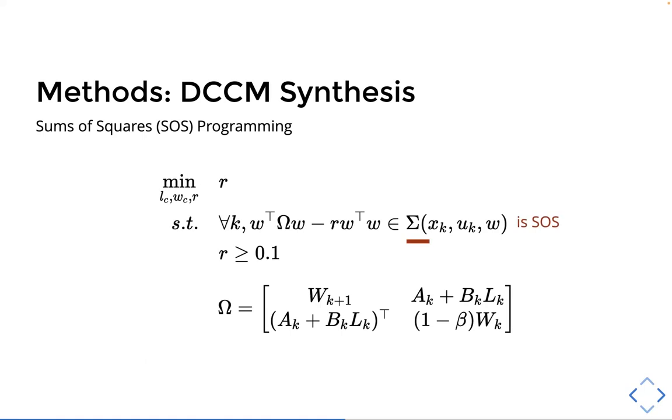And then we put this into the sums of squares programming formulation where omega is that matrix that we calculated earlier. Sigma is just the set of polynomials that is sums of squares. R is a relaxation slack variable that makes solving the problem easier. And our main decision variables are the coefficients of the L and W matrices. And then different from how it's done in the paper I was referencing, we want to enforce this over samples because we don't have closed form solutions of the A and B matrices. To get the A and B matrices and the next state is actually its own optimization problem. And so the best we can do is enforce this over samples.